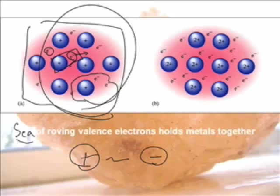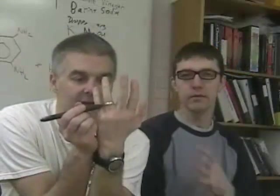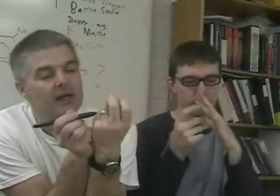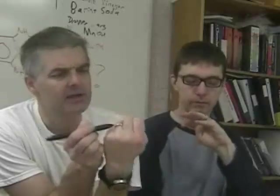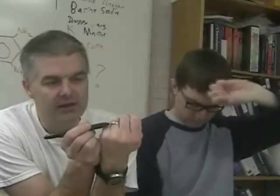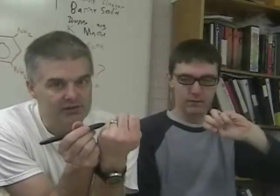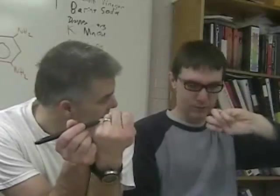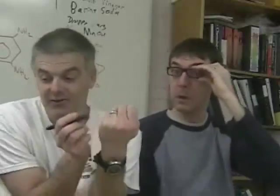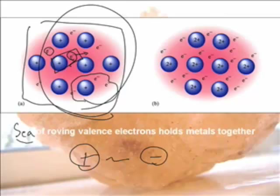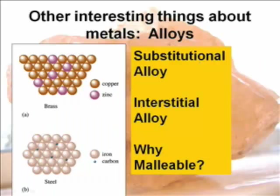So if you're wearing a metal object — I have my gold wedding ring on my finger right here — envision that there are electrons moving around, creating small little regions of positive and negative charge, which causes the gold to stick together. There are also things called alloys — mixtures of metals — and there are two varieties: substitutional alloys and interstitial alloys. This looks like it has to do with size, and it does.